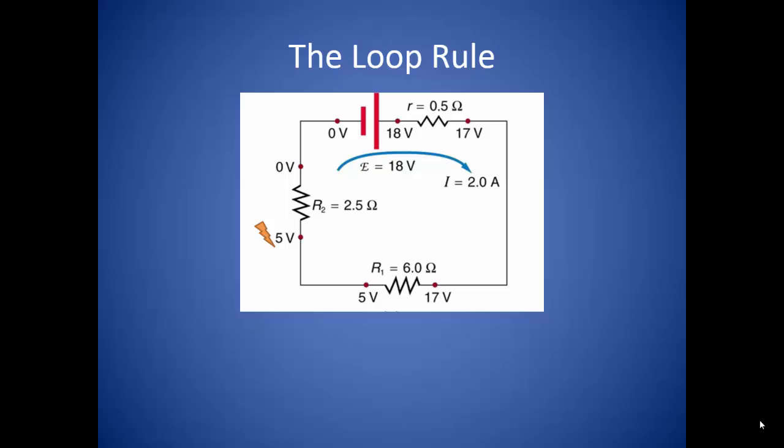So in this example, if we measure the potential on the negative side of the battery, we find 0 volts. The potential will rise as we move across the battery whenever the battery voltage is, in this case, 18 volts.